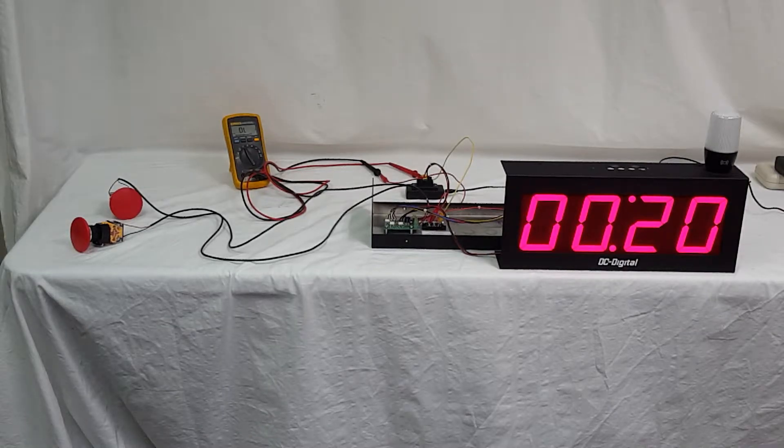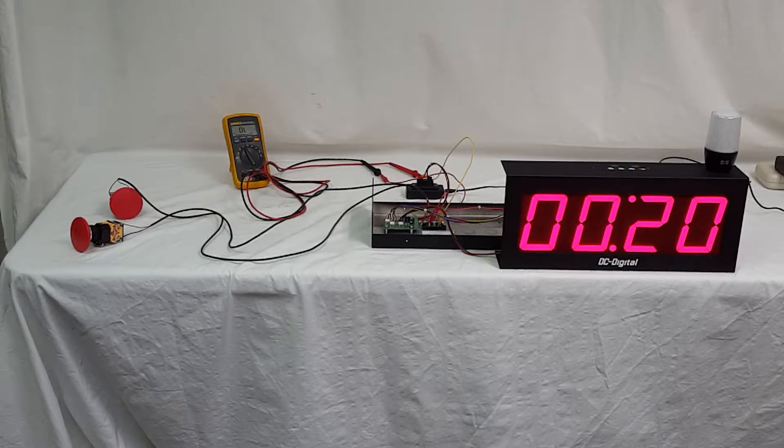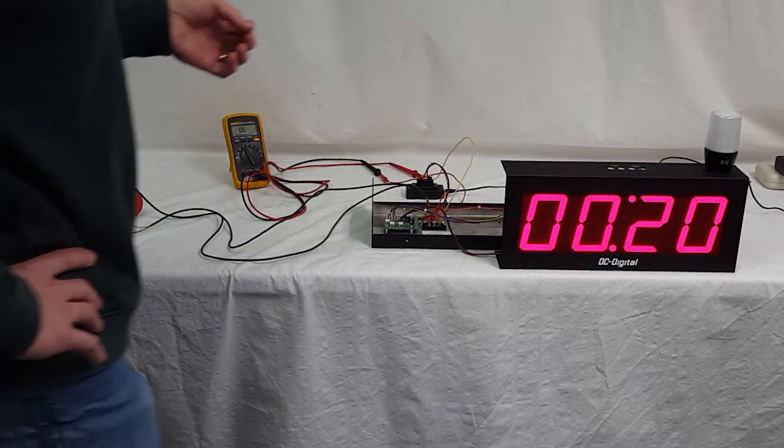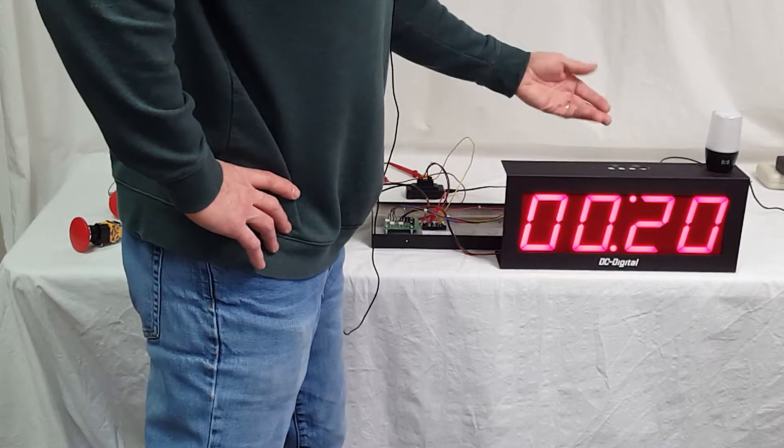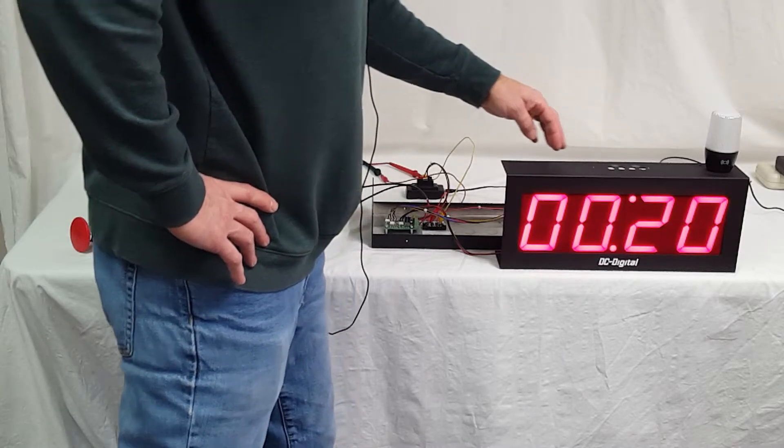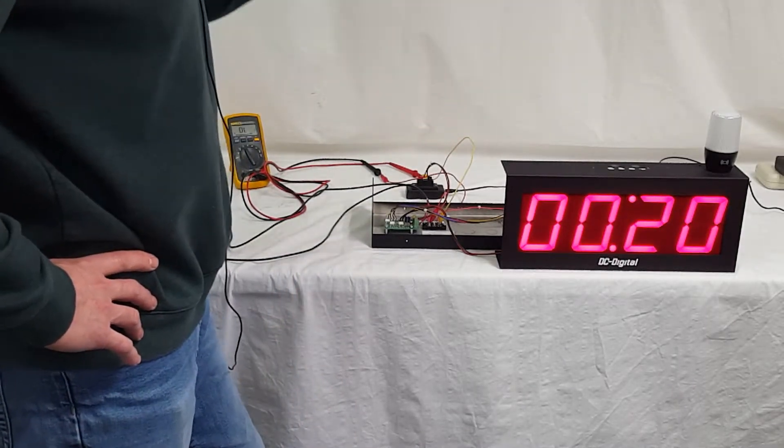Hello, this is Jim with DC Digital. Today I'm demonstrating a DC-40T-DN-BCD, a 4-inch countdown timer with BCD rotary set switches on top that can be set for minutes and seconds. We can set them up for hours and minutes if you want, but standard is minutes and seconds.